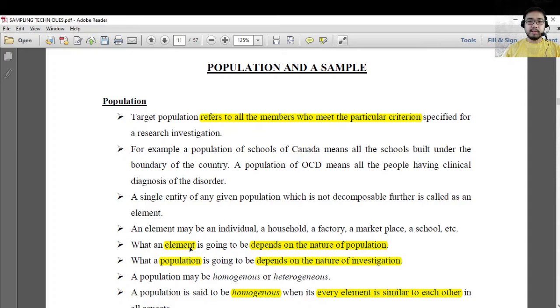An element depends on the nature of population. For example, if the nature of your population is students, then an element of that population will depend on that nature. It means the elements that you are going to choose are also coming from those students. A population depends on the nature of the investigation.